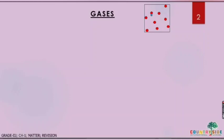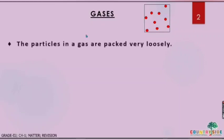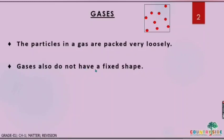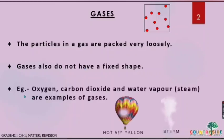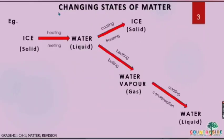Liquids do not have a fixed shape. They can easily flow and take the shape of the container. Examples are water, milk, juice, and oil. Next is gases. Here in the figure the tiny particles are moving away from each other and are very loosely packed. The intermolecular space between them is also more. So the particles in gas are packed very loosely.